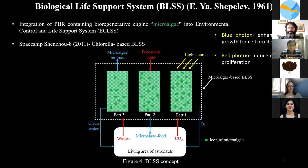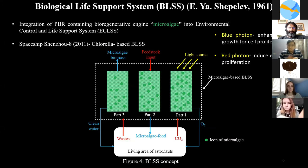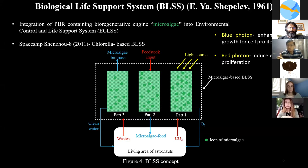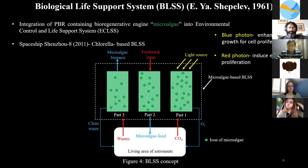After cultivation, the microalgae can be used as a food source. The waste from the astronauts is consumed by the microalgae and can be used for the production of water, and the cycle repeats. An interesting fact is that in the ISS, they use blue LED light to increase cell growth and red photons to induce enhanced cell development.